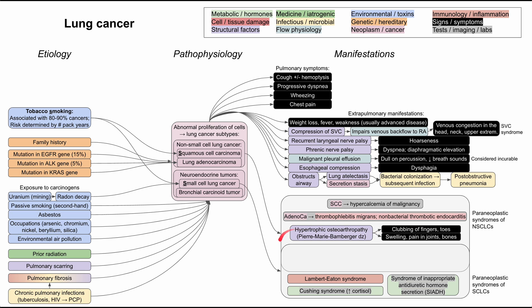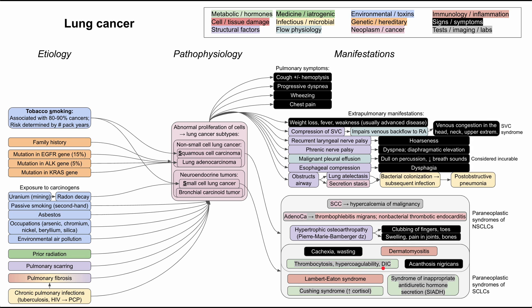Some paraneoplastic syndromes common to both small cell and non-small cell lung cancers include cachexia and wasting, dermatomyositis, thrombocytosis, hypercoagulability, DIC, and acanthosis nigricans. This has been a video on lung cancer.